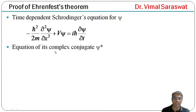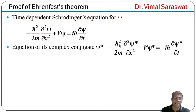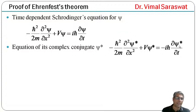Now the equation of its complex conjugate, that is for psi-star. For the complex conjugate, we replace iota with minus iota and psi with psi-star. So the equation becomes: minus h-cross squared upon 2m times del²psi-star/del x² plus V·psi-star equals minus iota·h-cross·(del psi-star/del t). This is the time-dependent Schrödinger equation for psi-star.